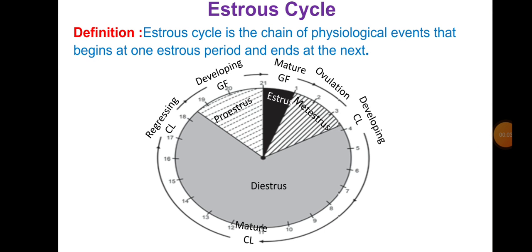Good morning students. Today's topic is the oestrus cycle. After a long valley vacation, this is a most important topic. The oestrus cycle is also called the human being menstrual cycle - same concept as the oestrus cycle or menstrual cycle, but with different periods in different animals such as cow, sheep, and goat. The definition: the oestrus cycle is the chain of physiological events that begins at one oestrus period and ends at the next.